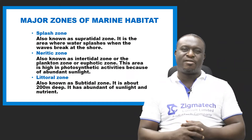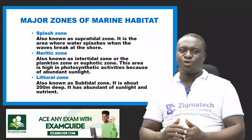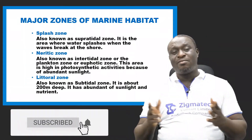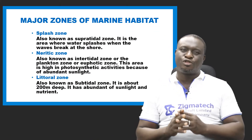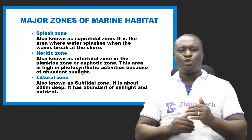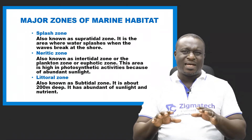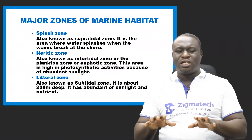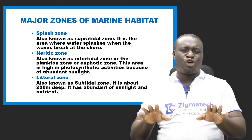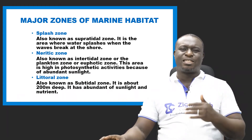Now let's look at the major zones of marine habitat. The first is the splash zone, also called the supratidal zone — the area where water splashes when waves break at the shore. The next is the intertidal zone, also called the neritic zone, where there is high photosynthetic activity and high light penetration. The third is the littoral zone, also known as the subtidal zone.